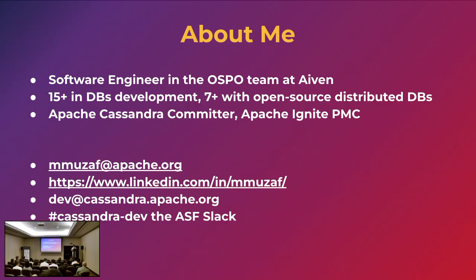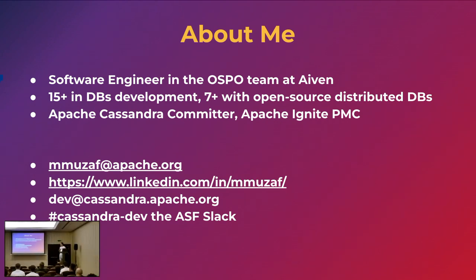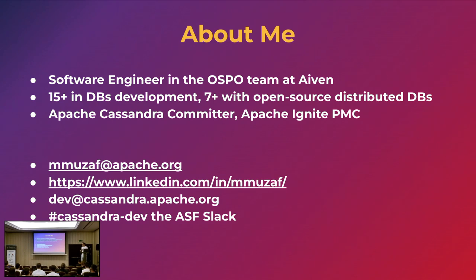A few words about me. I'm a software engineer at AVEN. We have different services, one of them is Cassandra. We have several deployments, and as I've talked with my colleagues, we have some issues with management operations — basically all of them are based on JMX, which is not so convenient for us. That's why I came across several initiatives that I'd like to show you.